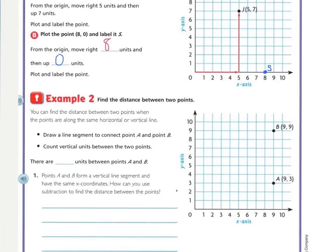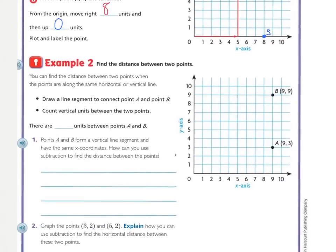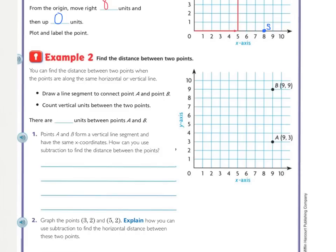Let's look at example 2. Now we're going to find the distance between two points. You can find the distance between two points when the points are along the same horizontal or vertical line. First, you draw a line segment to connect points A and point B. That's not a perfect line, but it's pretty close. And then it says, count vertical units between the two points. How many spaces are there between here? There's 1, 2, 3, 4, 5, 6. There are 6 units between A and B. So, the distance between them is 6.